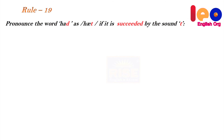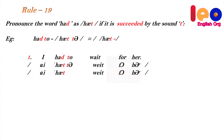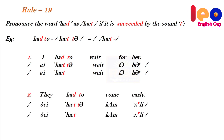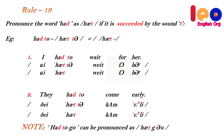Rule 19: Pronounce 'had' as 'hat' — meaning the 'd' in 'had' must be pronounced as 't' — if it is followed by a 't' sound. Example: 'had' plus 'to' sounds as 'hat to'. Don't say 'I had to wait for her', say 'I hat to wait for her'. Don't say 'they had to come early', say 'they hat to come early'. Note: 'had to go' can be pronounced as 'hat to go'.